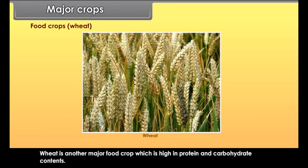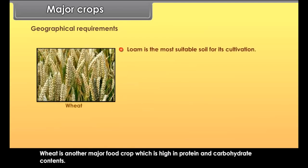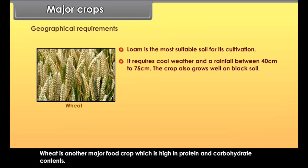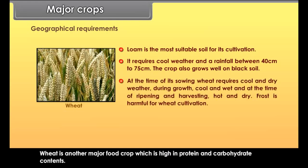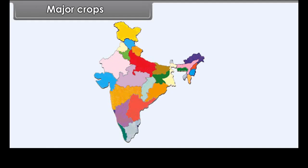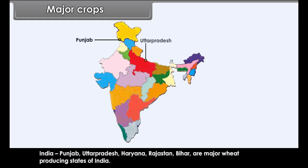Wheat is another major food crop, high in protein and carbohydrate contents. Loam is the most suitable soil for its cultivation. It requires cool weather and rainfall between 40 cm to 75 cm. The crop also grows well on black soil. At the time of sowing, wheat requires cool and dry weather; during growth, cool and wet; and at the time of ripening and harvesting, hot and dry weather. Frost is harmful for wheat cultivation.